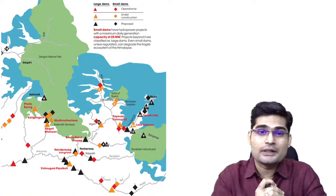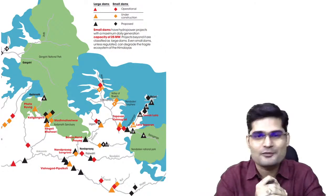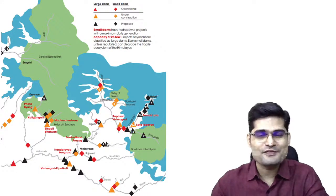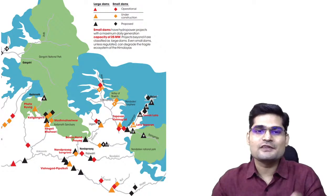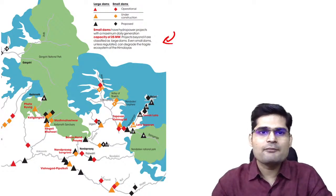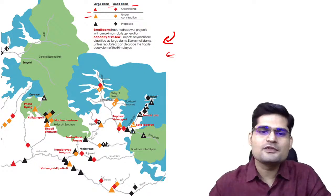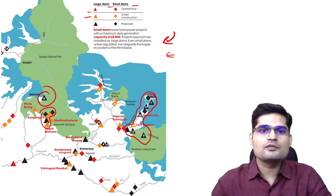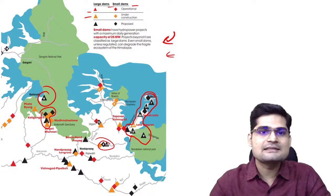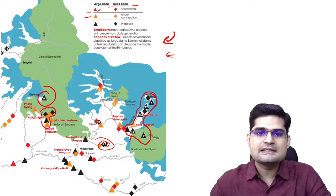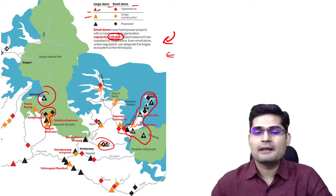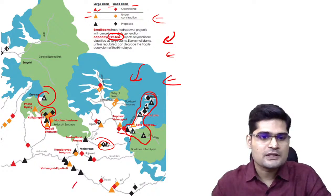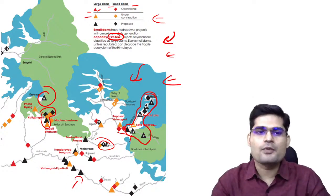Since this area was in the news, it is also important to understand the hydropower projects here. About 26 hydropower projects were stopped by the Supreme Court of India in 2014 due to environmental sensitivity. The map shows large and small dams — the black symbols are planned future ones, the red ones are already existing. This area has numerous hydropower projects ranging from small to 25 MW projects.